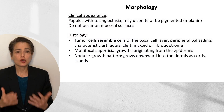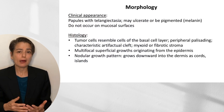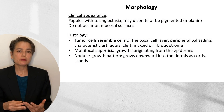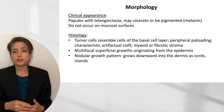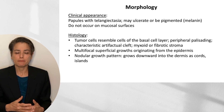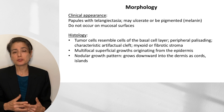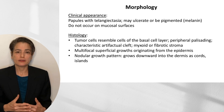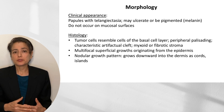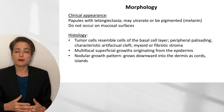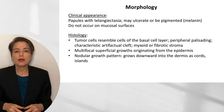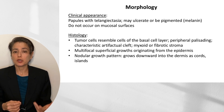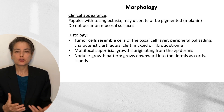Clinically, basal cell carcinomas present as papules — raised lesions that frequently have telangiectasia, which are dilated capillaries — though these may not be apparent due to ulceration or melanin pigmentation. Because basal cell carcinomas arise from follicular epithelium, they do not arise on mucosal surfaces. Histologically, we see tumor cells resembling the cells of the basal cell layer with peripheral palisading — nuclei lined up like a picket fence — a characteristic artifactual cleft in processing, and a surrounding myxoid or fibrotic stroma.